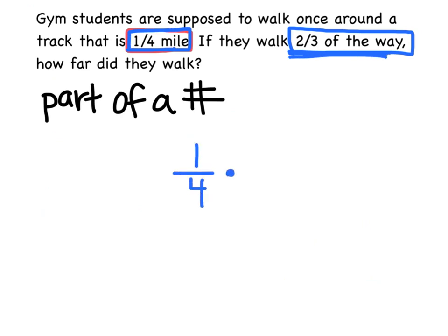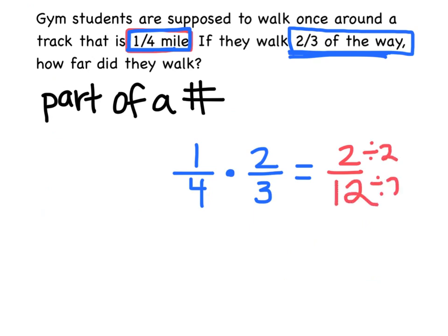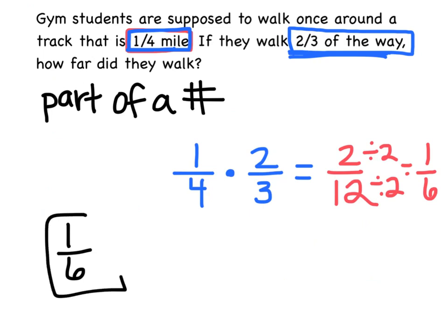He only walks two-thirds of the way, so I'm going to do a fourth times two-thirds. Now I can just multiply straight across. One times two is two, four times three is twelve. I should simplify — two goes into both, so I'll divide both by two and I get one over six. So really, they walked a sixth of a mile.